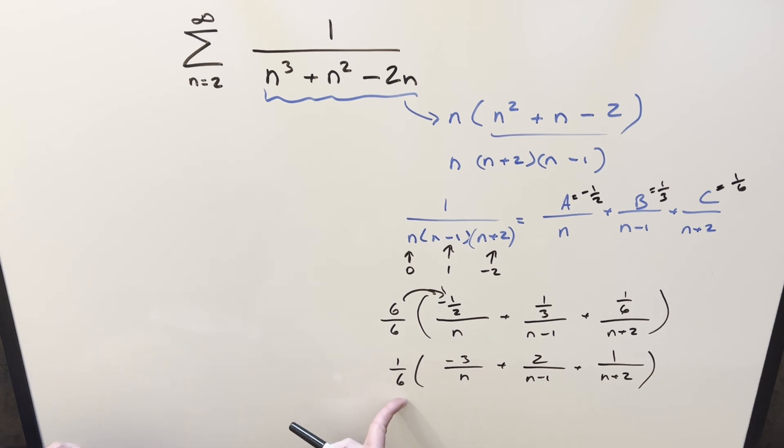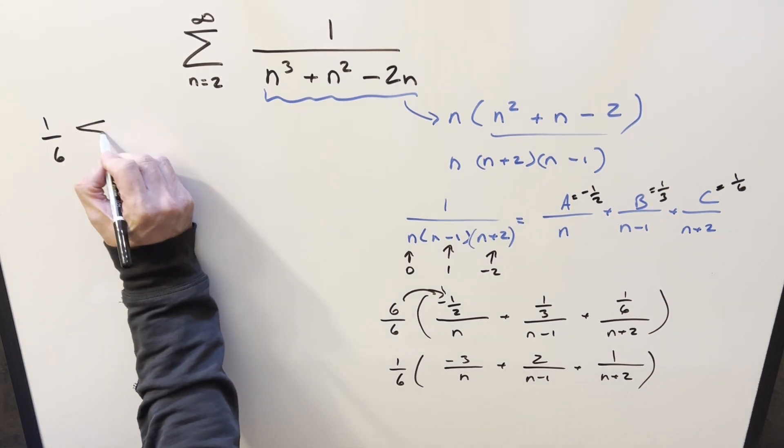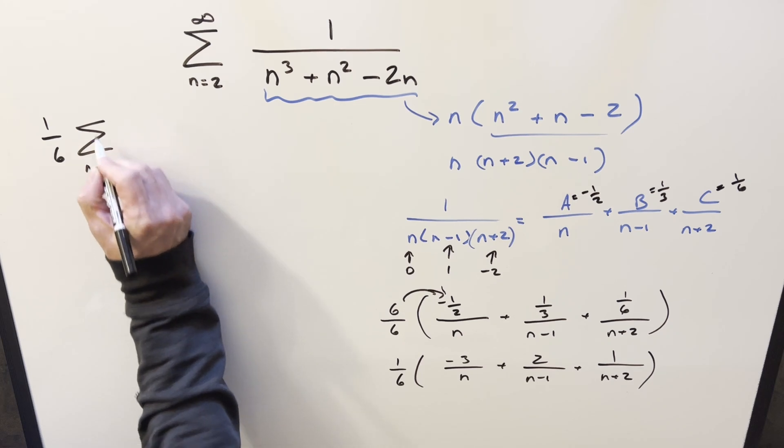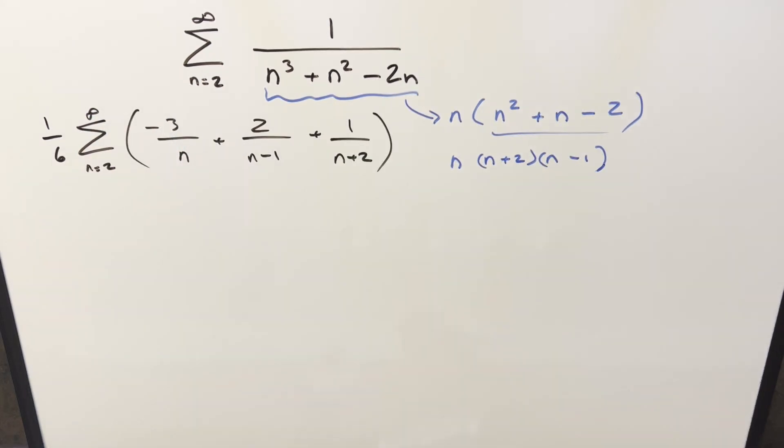But we have the 1 sixth that we can bring out front as a constant. And then inside of our sum, from 2 to infinity, we're going to have all this stuff right here. And then at this point, one thing we could do is just start plugging in n values and writing out terms. I can tell you that this is telescoping, but the trouble is, with different coefficients, with n minus 1, with everything going on, the telescoping is a little more complicated and tedious, so I want to do it a slightly different way.